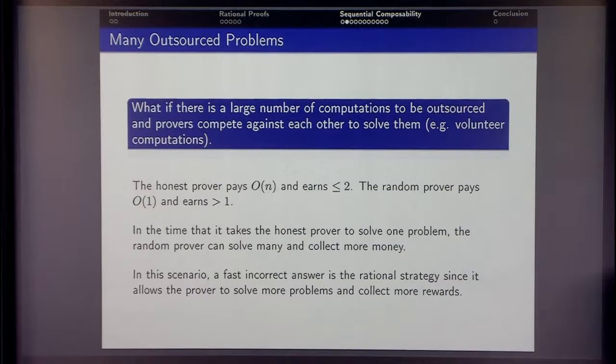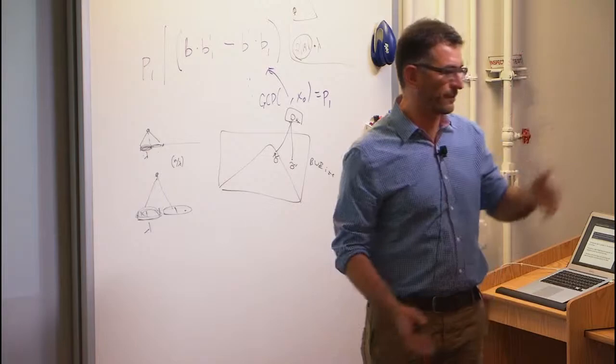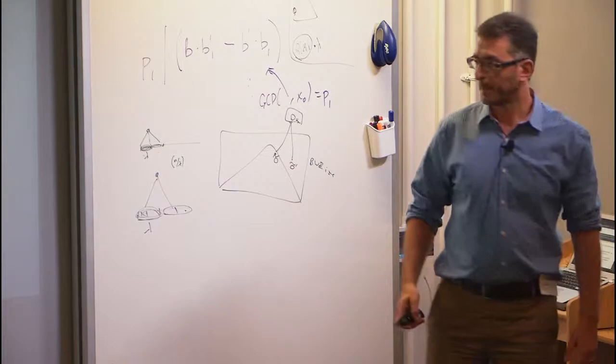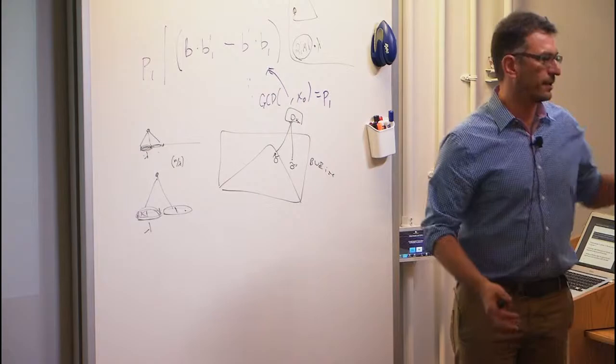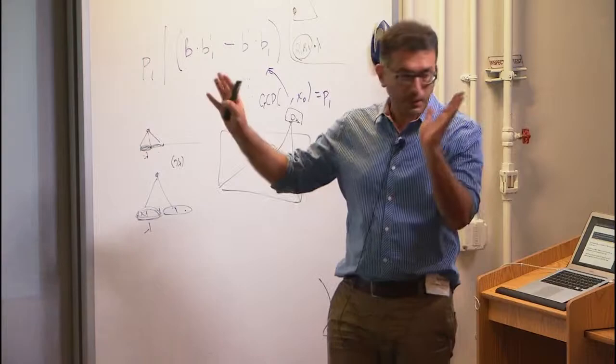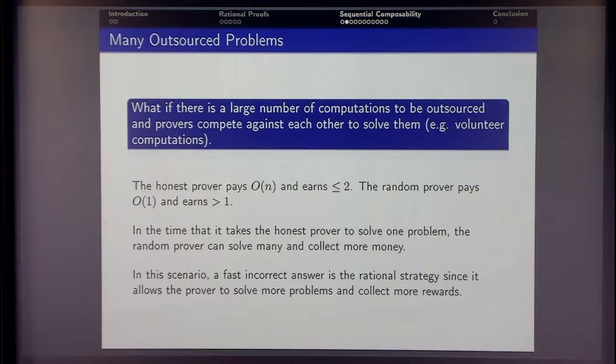This problem is independent of scaling — you can scale your reward by any multiplicative factor and this is still going to be a problem. Scaling helps ensure a positive profit, but you're still stuck with this issue. To be fair to the original authors, this was not in their model — it's a problem with the model, not a problem with their solution.